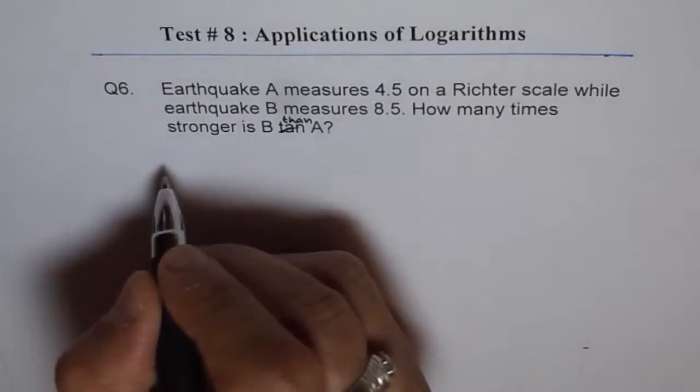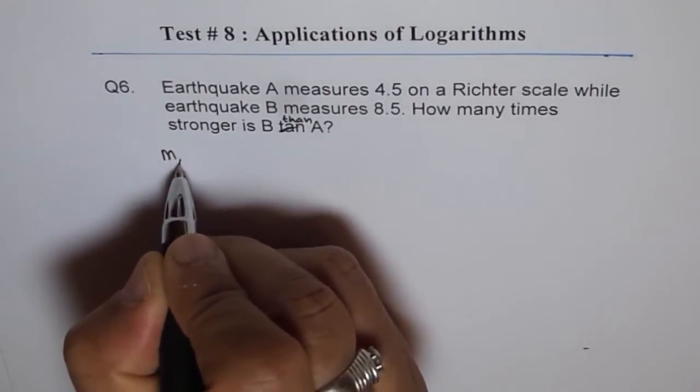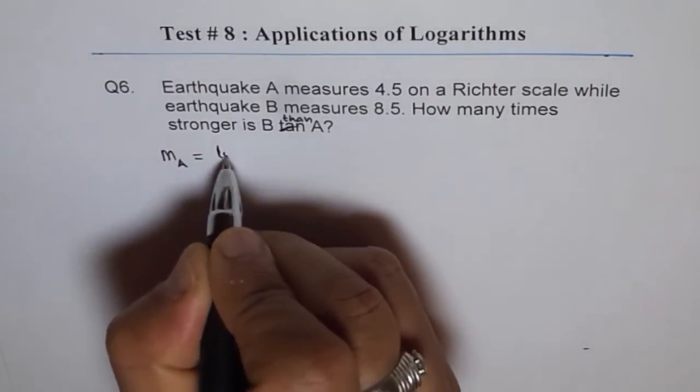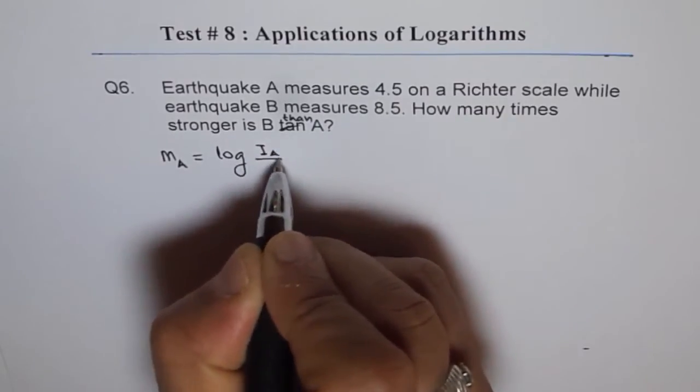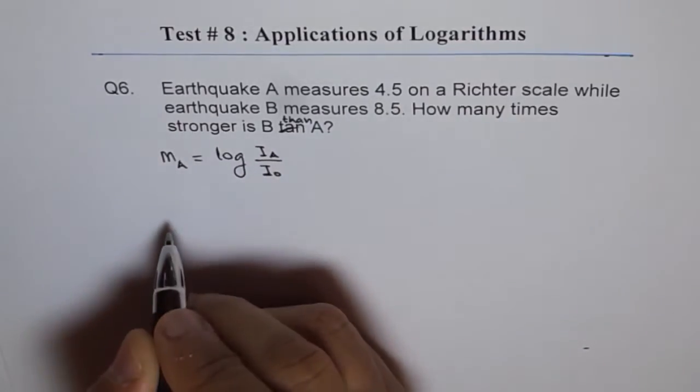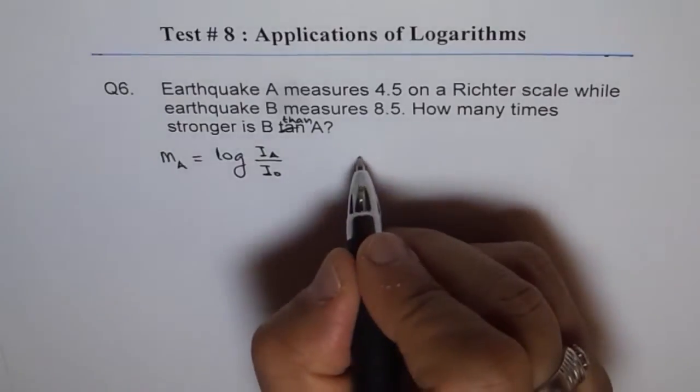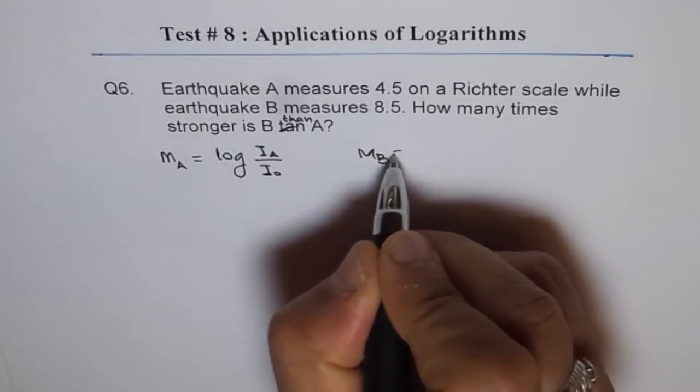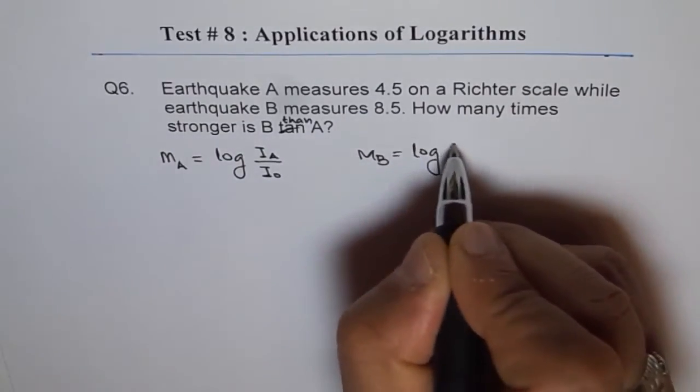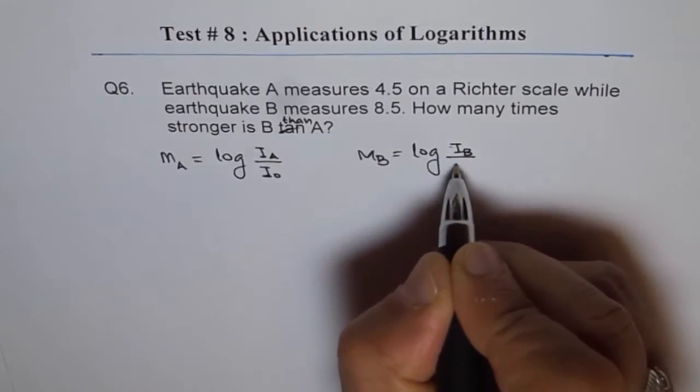So, earthquake A we can say, M A equals to log of intensity of A over I0, right? And earthquake B, we can write M of B equals to log of I B over I0.